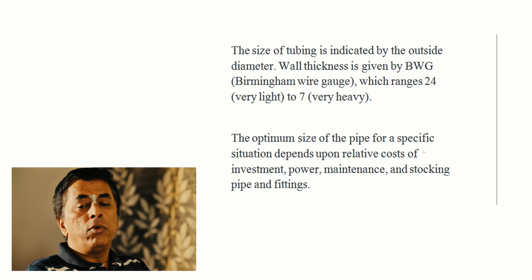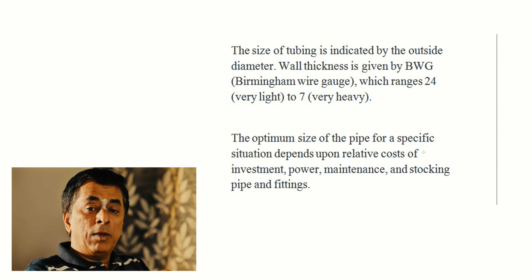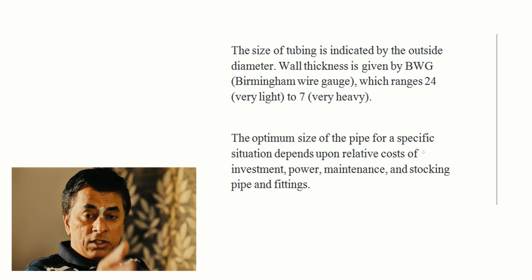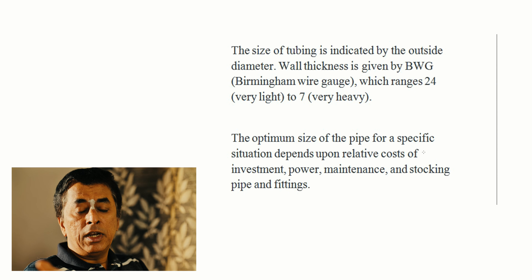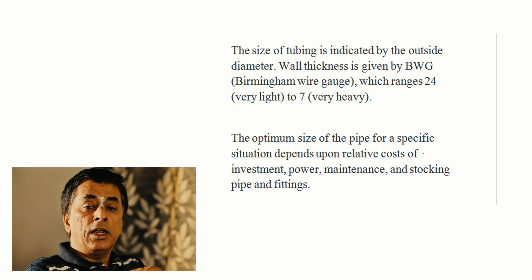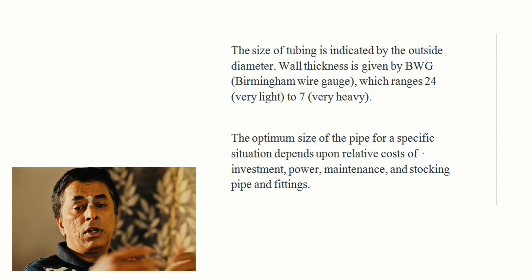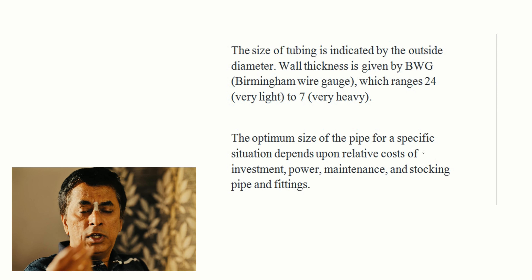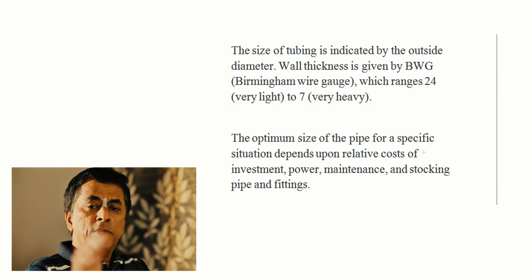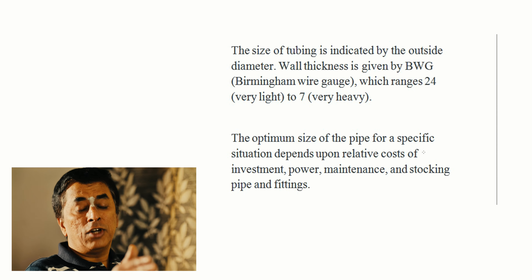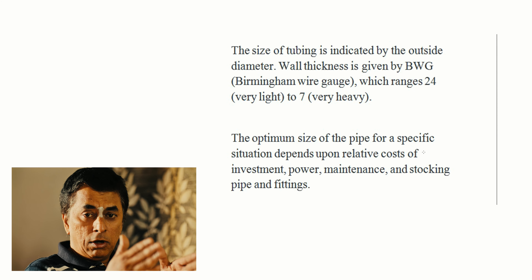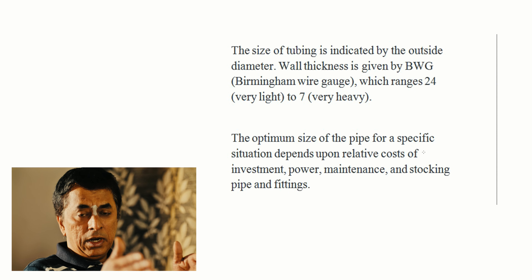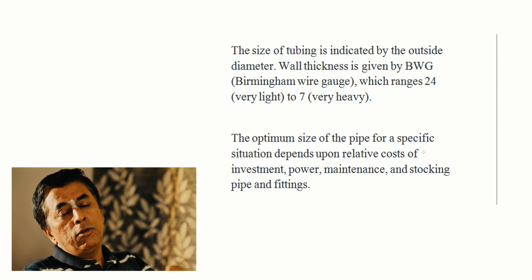Pipe insulation is also important in selection. Cold conservation insulation is used when transporting materials below room temperature, using thicker insulation material. Hot conservation insulation is used for steam or hot water, with thinner insulation. The choice of insulation depends on the material being transported and its operating conditions. Pipe fittings must also be considered, as pipelines must be joined and the fitting type depends on diameter and application.